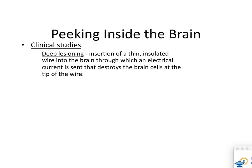With deep lesioning, we're burning a part of the brain. We're not exactly sure where everything occurs in your brain, but we know that if we burn a hole in a specific part and your personality changes, we've learned that something there is controlling that function. That is how we use it to learn about the brain — peeking inside to find out what information is controlled where.